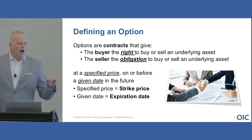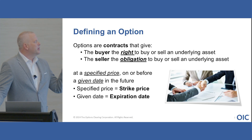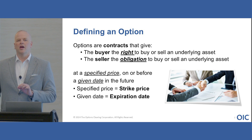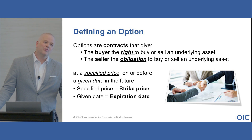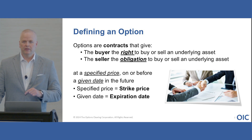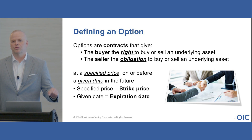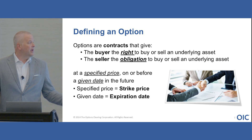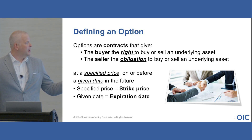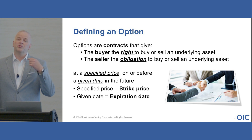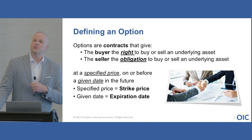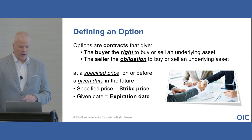So let's talk about what an option essentially is. Options are contracts that give buyers the right to buy or sell the underlying asset, and the seller incurs the obligation of making that contract whole. If there is an exercise or assignment event, the person being assigned on that contract is the person who sold it, and the person exercising it is the person who bought it.